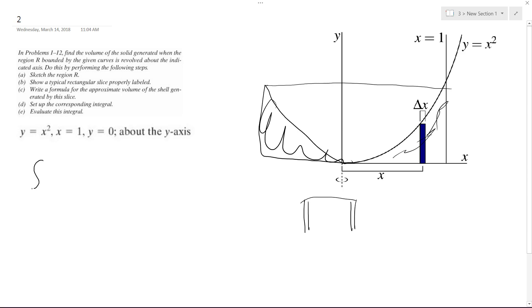It's going to be from zero, so we're starting at the origin here, x equals zero, and we're going to one, two pi, x, and then the equation we're using is x squared, and then dx.